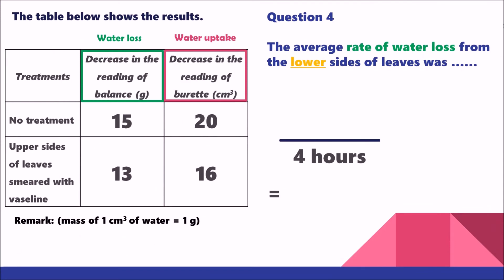Now for the questions on Setup 2, where the upper surface of the leaves was smeared with Vaseline. Question 4 asks for the average rate of water loss from the lower surface of the leaves. From the table, the water loss for Setup 2 is 13 grams. Dividing by 4 hours gives 3.25 grams per hour — which can also be written as 3.25 cm³ per hour, since the units are interchangeable.